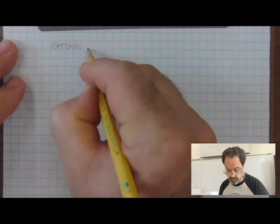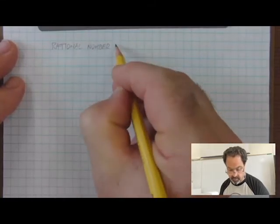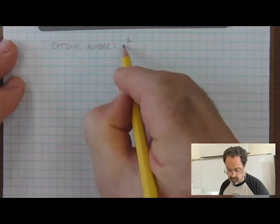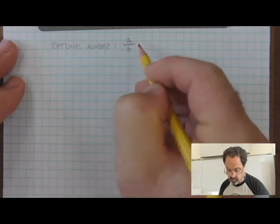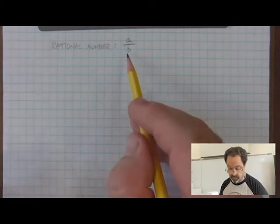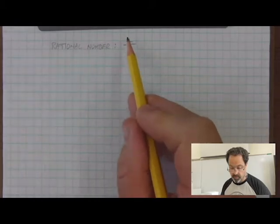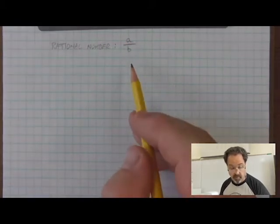A rational number is one that can be expressed as a fraction. For example, A over B. A could be anything, B could be anything. It's a rational number if the result can be expressed as a number expressed as a fraction.